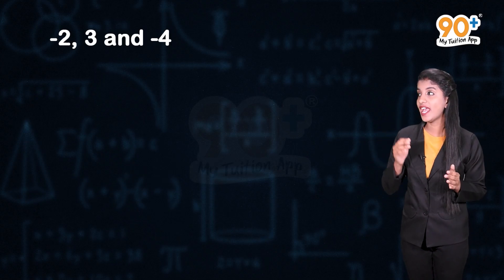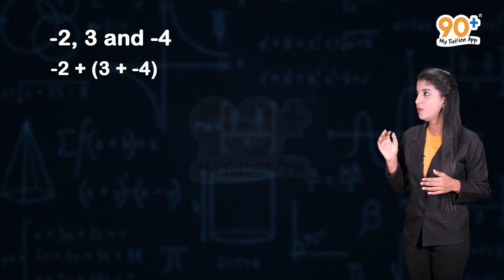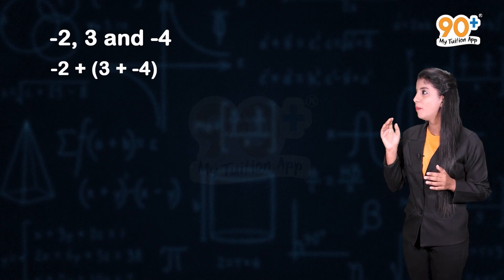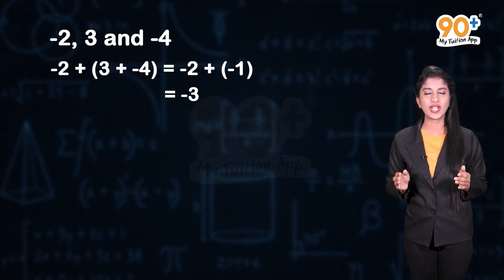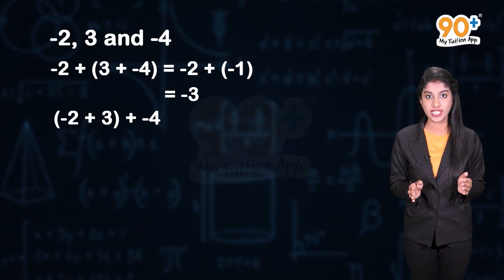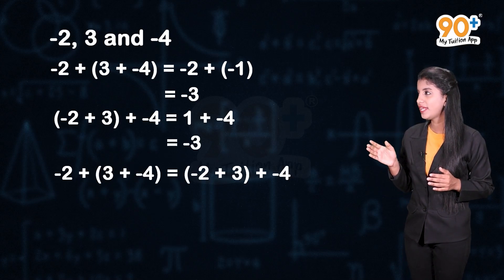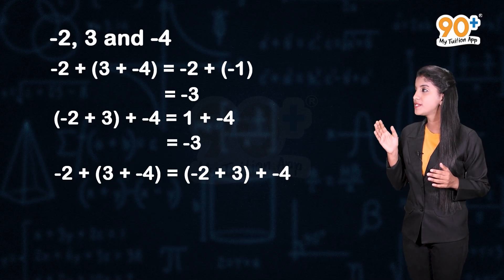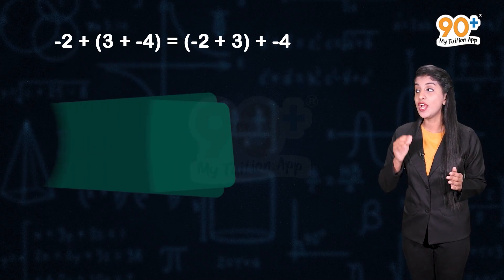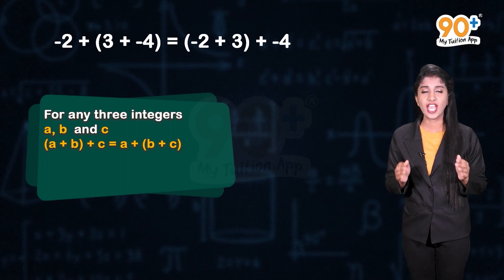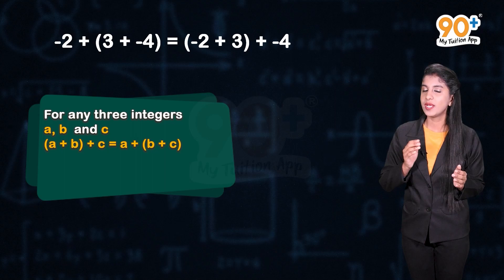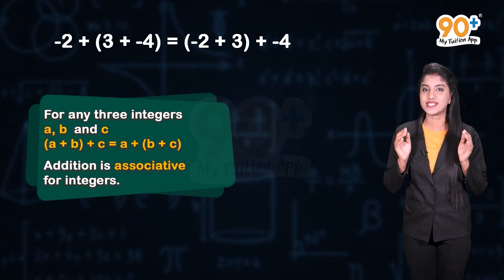Next, let us find out whether the set of integers satisfies associative property under addition, subtraction, multiplication and division. Let us consider three integers -2, 3 and -4. What is -2 + (3 + (-4))? That is equal to -2 + (-1) = -3. Now, what is (-2 + 3) + (-4)? That is equal to 1 + (-4) = -3. So we can say that (-2 + 3) + (-4) = -2 + (3 + (-4)). In general, for any 3 integers a, b and c, (a + b) + c = a + (b + c). So we can conclude that addition is associative for integers.